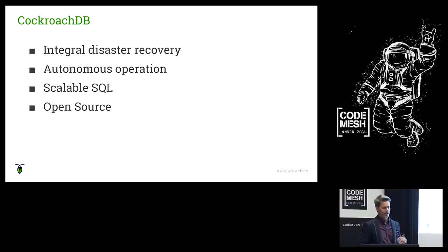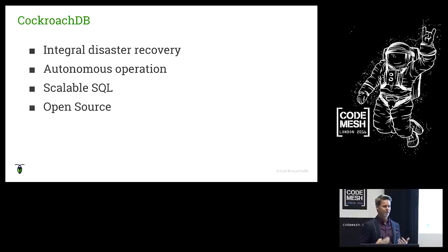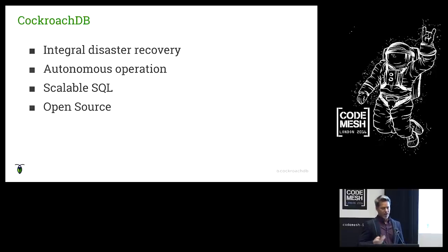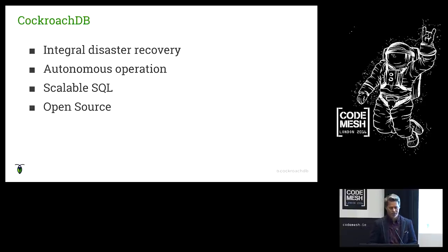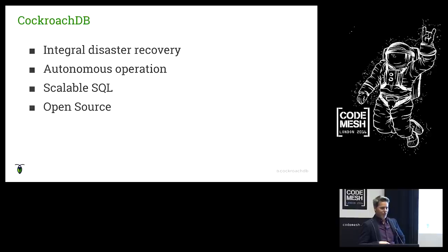Of course you can survive disks failing and machines failing, but we actually wanted to push it further and survive data centers failing, which leads into features like geo-replication. We also want the system to be very autonomous in its operations, easing the burden on the people running it. So it self-organizes using a peer-to-peer gossip network, similar to Cassandra. It self-heals and auto-rebalances — evocative of autonomous operation.